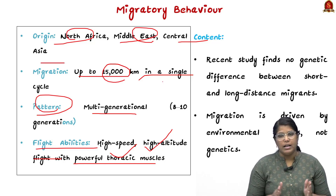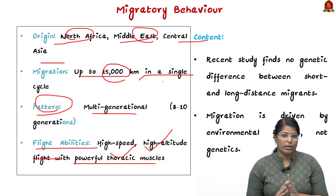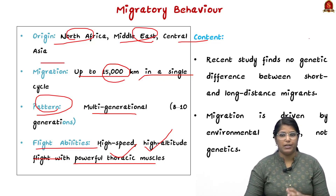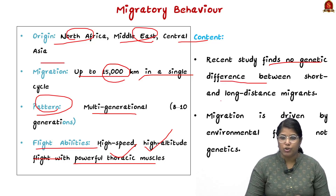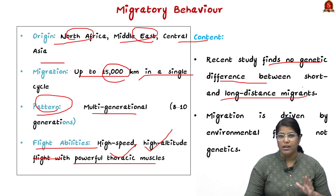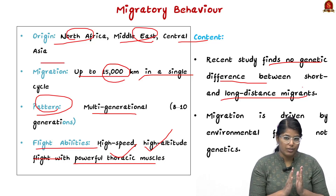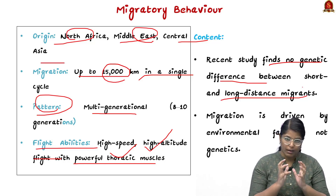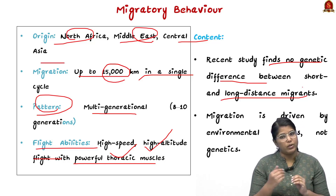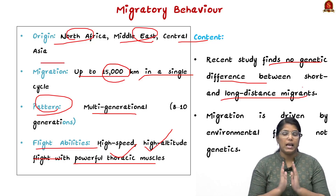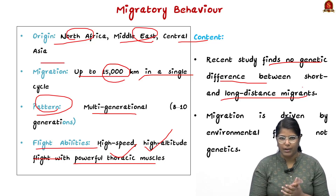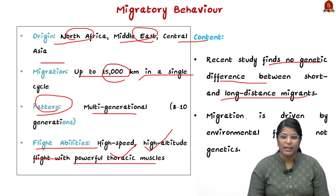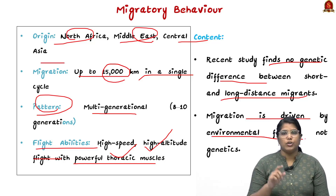Now let us go through the key findings of the report. First, the study found no genetic difference between short and long distance migrants — this species has both short and long distance migrants but they share the same genes. Second, migration is driven by environmental factors, not genetic factors. This leads us to two important science terms: genotype and phenotype.